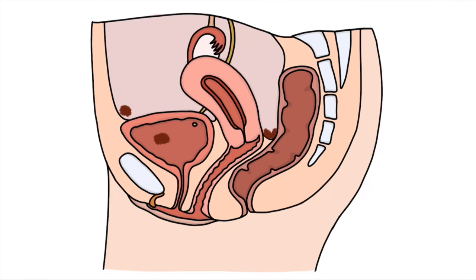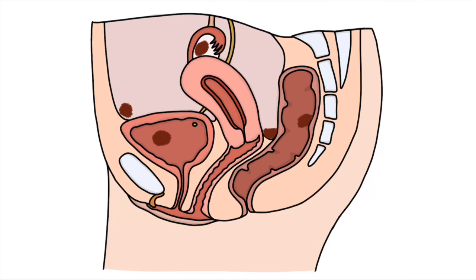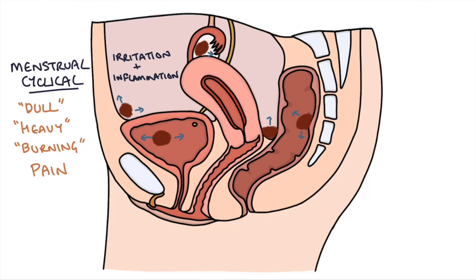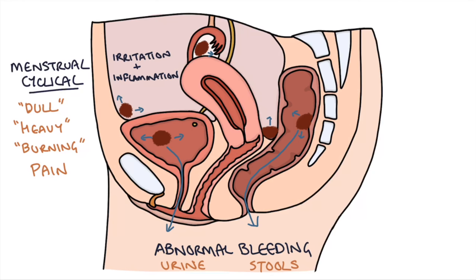Once these cells settle outside the uterus, they continue to respond to hormones in the same way as the endometrium in the uterus. Throughout the menstrual cycle they develop and thicken, and then during menstruation they also shed. This bleeding elsewhere in the body causes irritation and inflammation of the surrounding tissues, leading to a cyclical dull, heavy, or burning type of pain that occurs around the same time as or slightly before menstruation. Where deposits of endometriosis occur in the bladder or bowel, this can lead to blood in the urine or stools during menstruation.